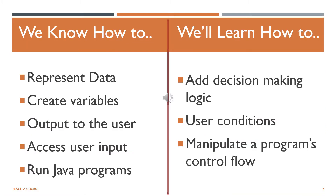In the previous videos we've looked at how we can represent data in Java using data types and variables, as well as how to input and output data. In this chapter we are going to add some decision-making logic that will allow our programs to have different outcomes. We can create more sophisticated control flow using these conditions.